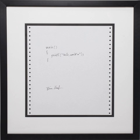A stored program computer requires an initial computer program stored in its read-only memory to boot. The boot process is to identify and initialize all aspects of the system, from processor registers to device controllers to memory contents. Following the initialization process, this initial computer program loads the operating system and sets the program counter to begin normal operations. Independent of the host computer, a hardware device might have embedded firmware to control its operation. Firmware is used when the computer program is rarely or never expected to change, or when the program must not be lost when the power is off.